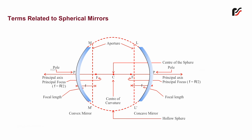h. Radius of curvature. Radius R of the hollow sphere whose part is spherical mirror, or distance between the pole and the center of curvature, is the radius of curvature.